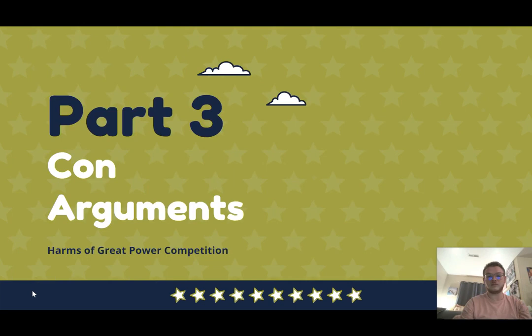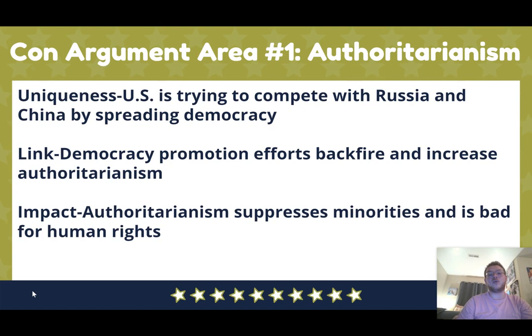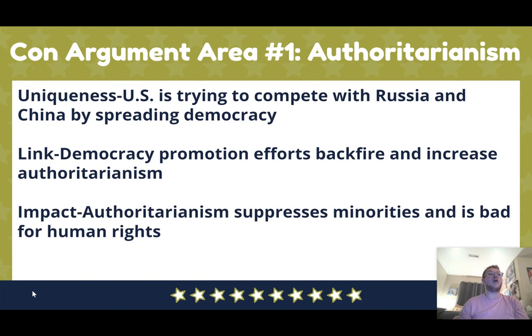Now the third part: con arguments, or harms of great power competition. Remember, you don't get to argue we should end it — you're just proving harms that have happened, are happening, and will happen. These are also in alphabetical order. For con arguments, the structure is: before GPC, something good was happening, and GPC trades off with and stops it; or there's a problem being caused by great power competition, and here's why that matters.